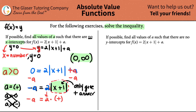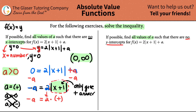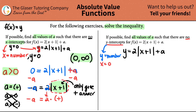Moving on to the next one — this is the opposite. If possible, find all values of a such that there are no y-intercepts for the same function: f of x equals 2 times the absolute value of x plus 1, plus a. So this is the same as y equals 2 times the absolute value of x plus 1, plus a. For a y-intercept, y has to be a number and x is going to be 0. So I'm going to plug in 0 for x.